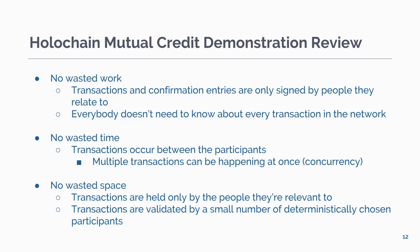In review, in Holochain there is no wasted work — transactions and confirmation entries are only signed by the people they relate to, and everybody doesn't need to know about every single transaction in the network; they only need to know about the transactions relevant to them. There's no wasted time: transactions occur between participants, not the entire network, and multiple transactions can be happening at the same time — that's concurrency. And there's no wasted space: transactions are held onto only by the people they're relevant to, and transactions are validated by a small number of deterministically chosen participants.